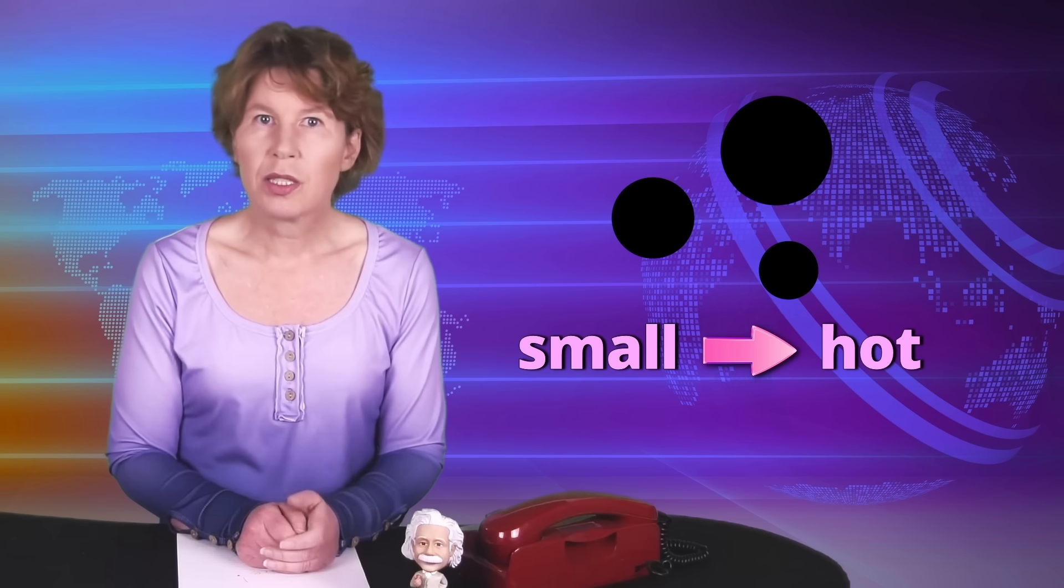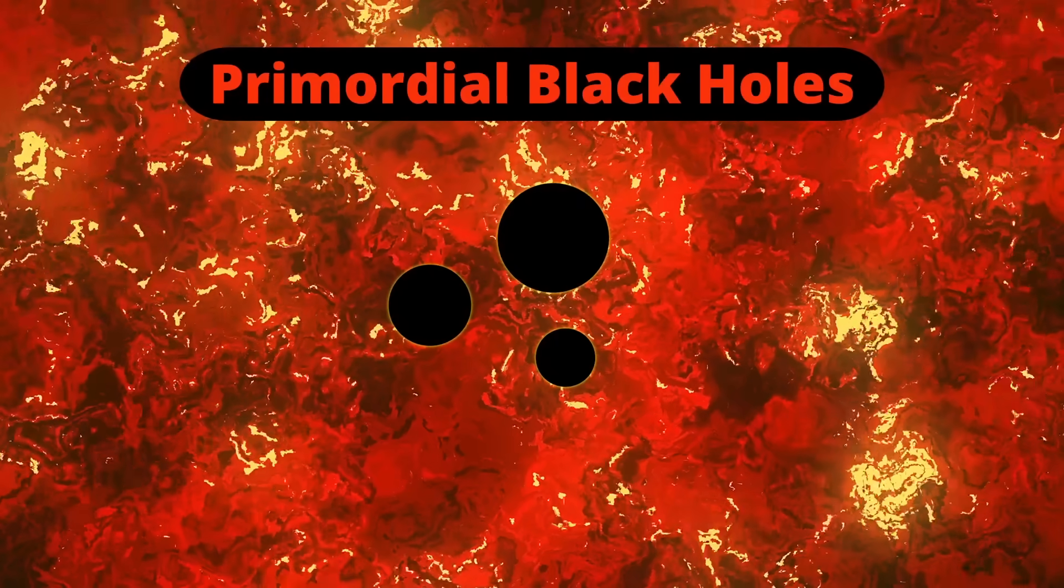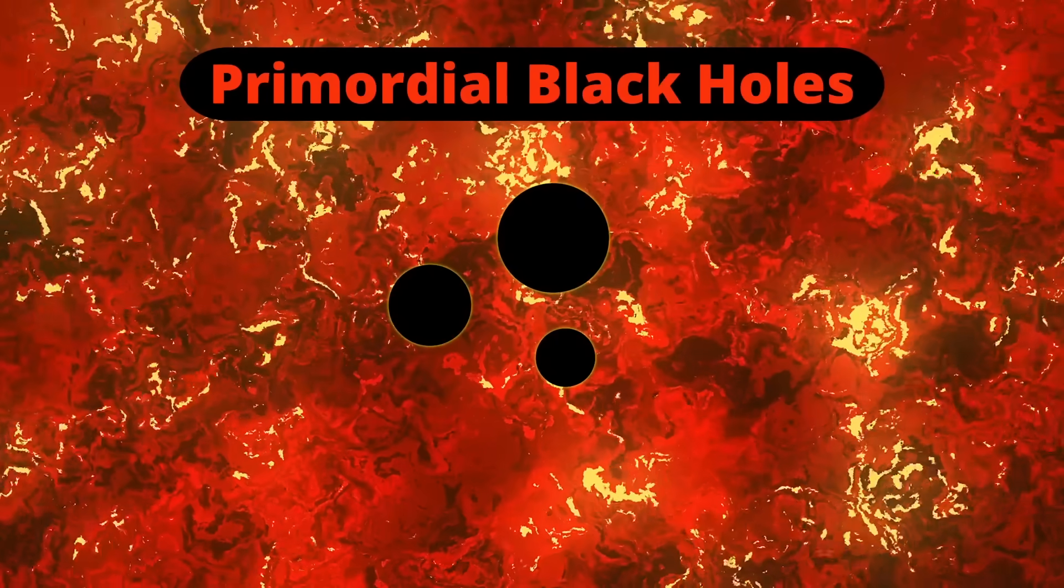Such small black holes can't form from the collapse of stars, but they could have been created in the early universe from over-dense fluctuations in the nuclear plasma. They're called primordial black holes and are also one of the hypotheses for dark matter.